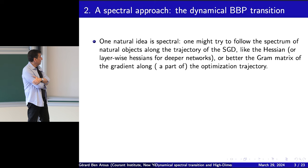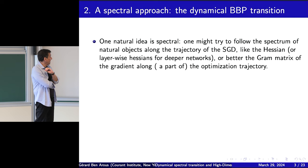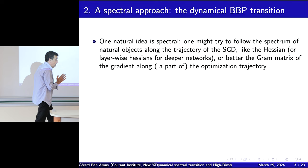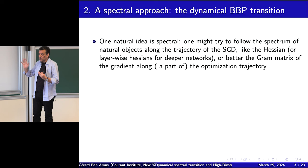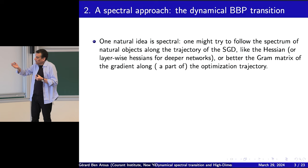One way is the spectral approach. You could try to follow the spectrum of natural objects along the trajectory of the SGD. This could be done for many problems, not only in data science but also in physics. You have a trajectory, and we're in very high dimension — this trajectory is just a little slice of something enormous, but it's supposed to be informative and supposed to be going where you want.